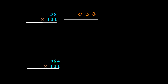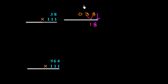Now we start to write down the answer. First of all, we write down 8 here. Then we have to add two numbers: 3 plus 8 equals 11, so we write 1 and carry 1.